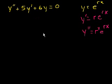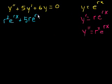And now we're ready to substitute back in, and I will switch colors. So y, the second derivative, that's r squared times e to the r x plus 5 times the first derivative. So that's 5r e to the r x plus 6 times our function. 6 times e to the r x is equal to 0.